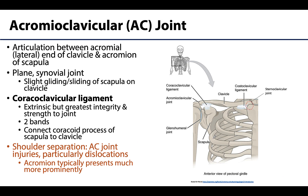Next let's discuss the acromioclavicular joint, often abbreviated as the AC joint. The full name spells out exactly which bony parts are articulating: the acromial or lateral end of the clavicle articulates with the acromion of the scapula, forming the acromioclavicular joint. This is a true synovial joint — specifically a plane type synovial joint, which is typically only capable of slight gliding or sliding movements, allowing the scapula to move slightly on that clavicle articulation.